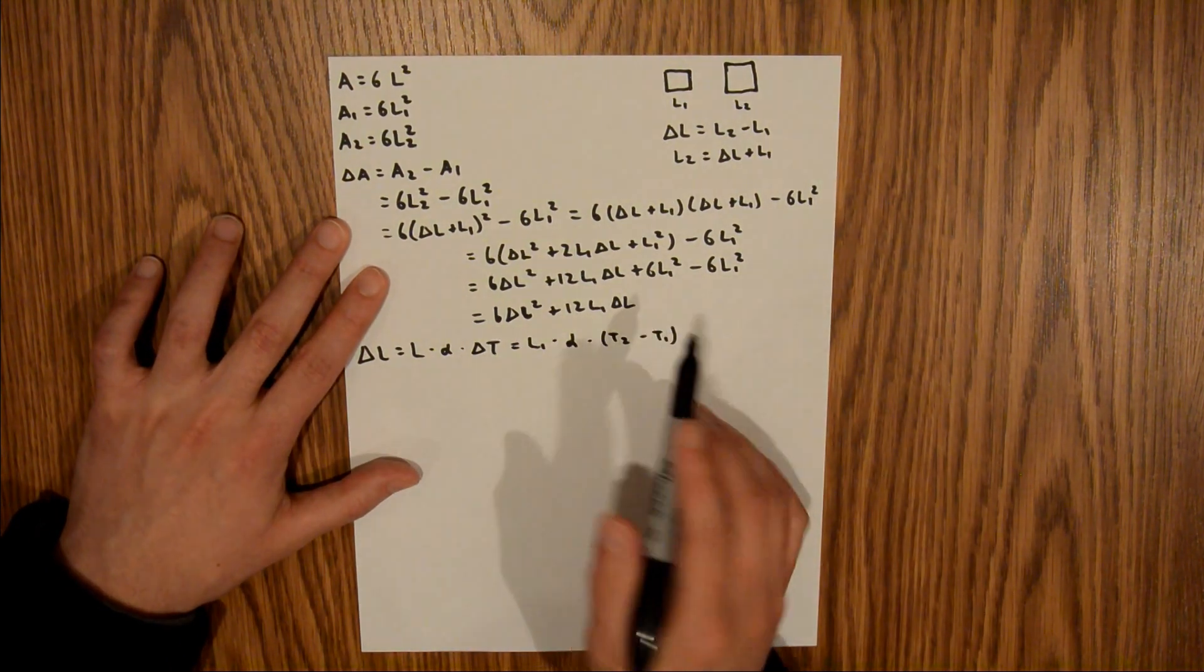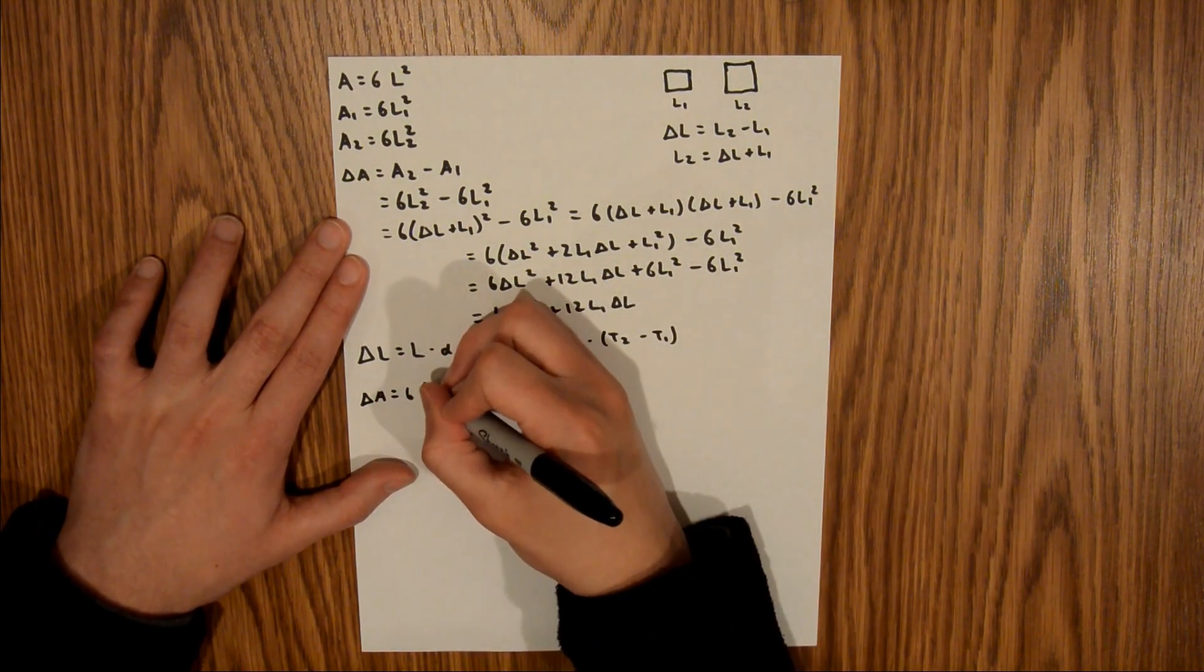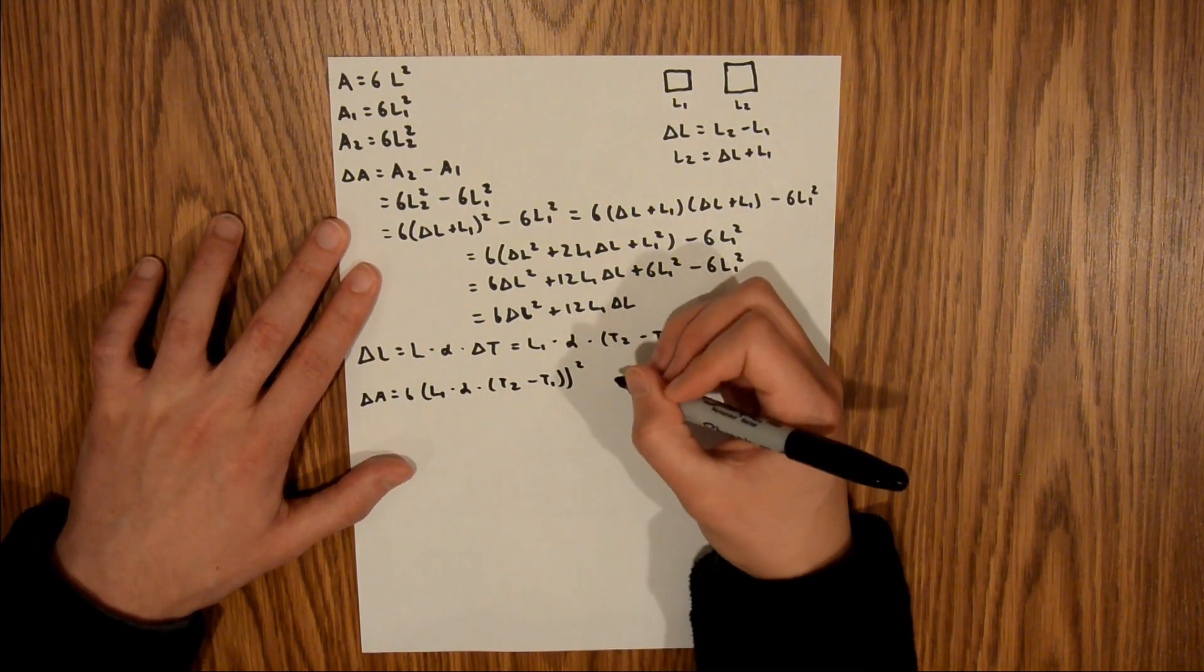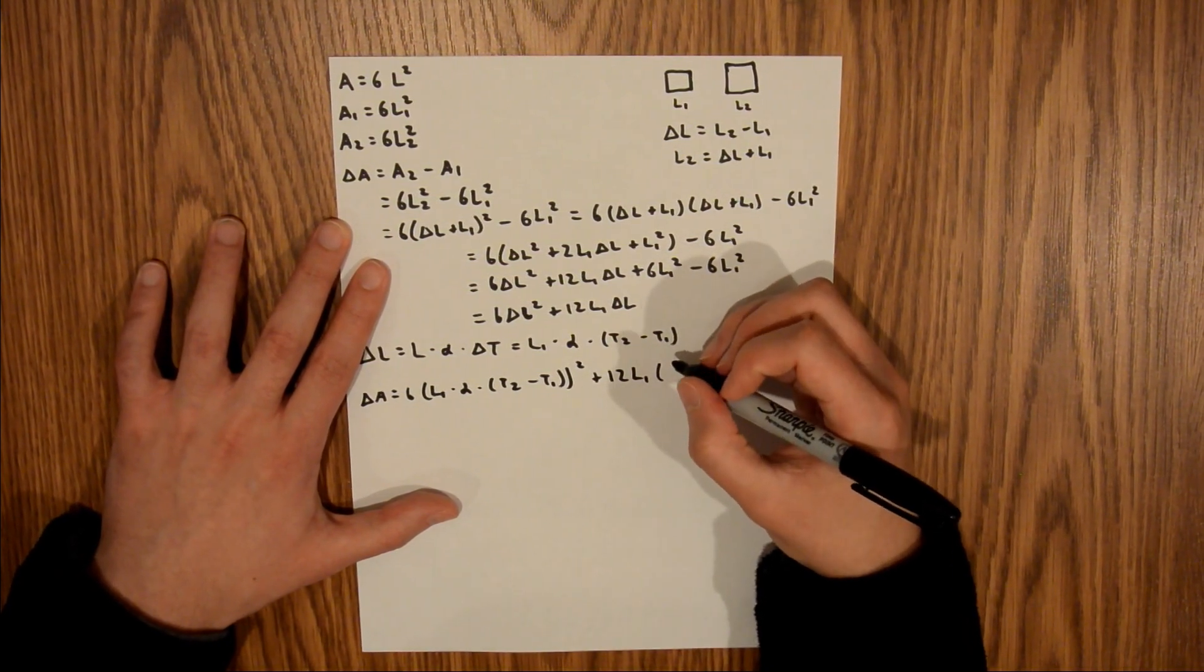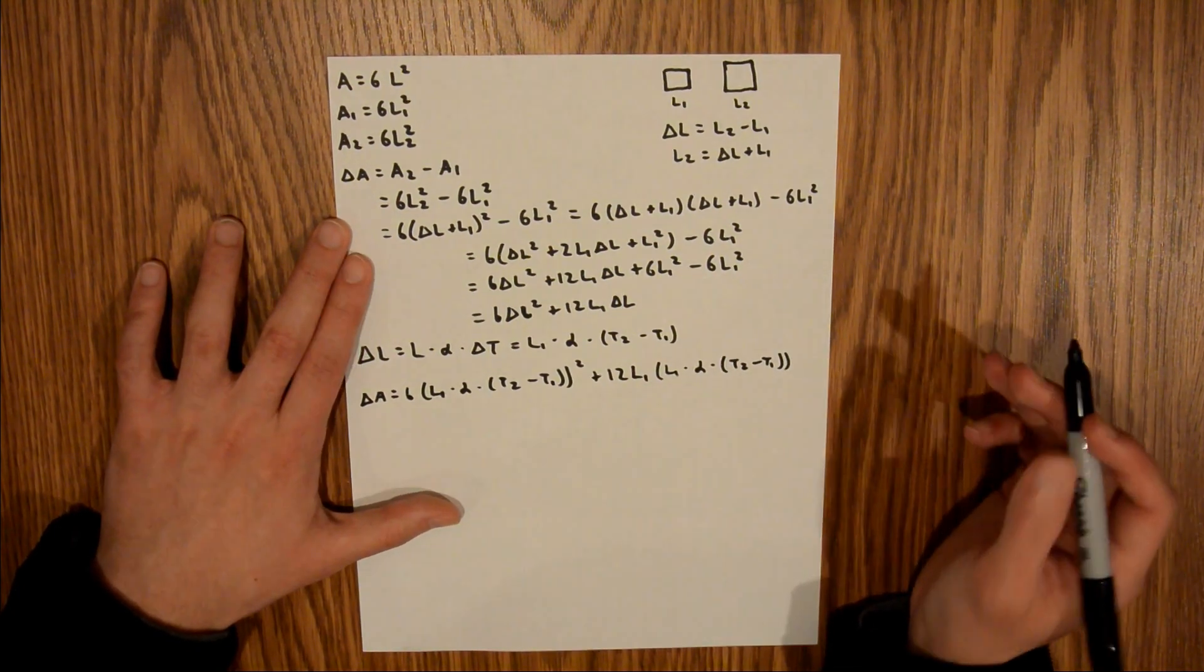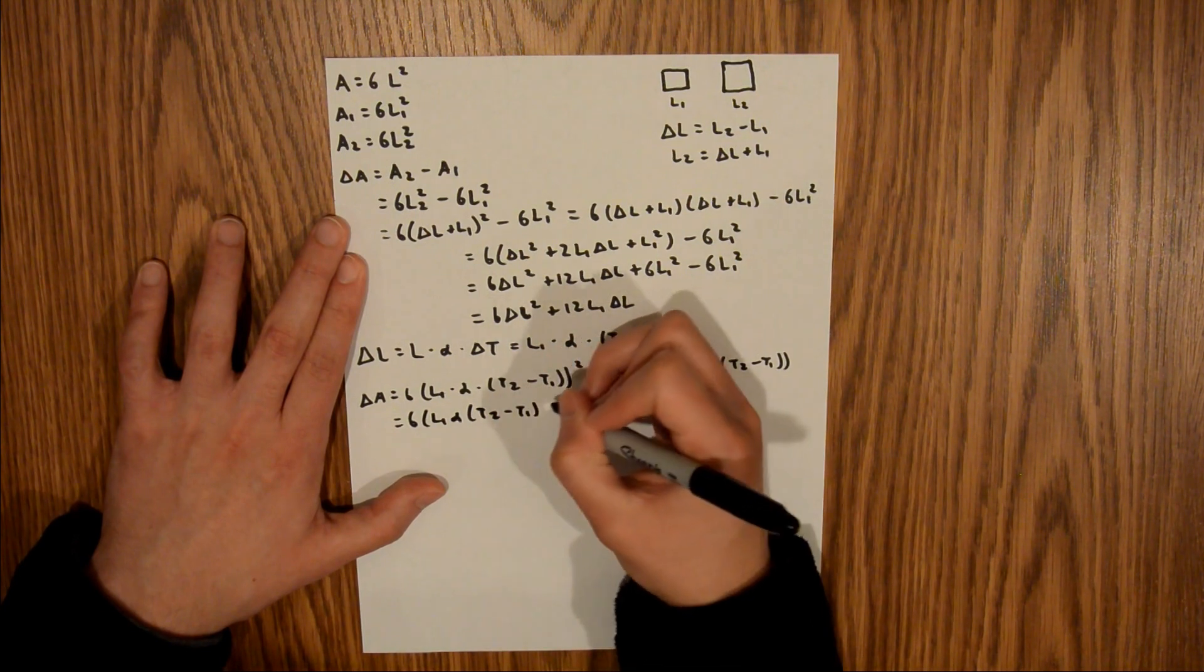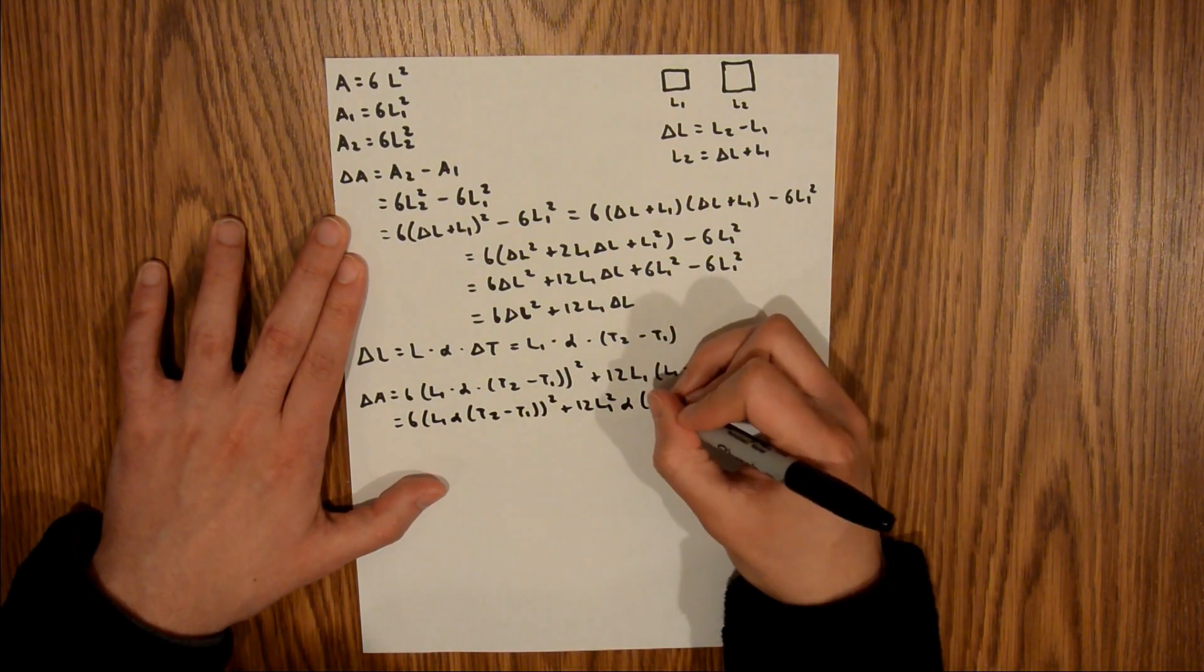And so now we can take that and plug it back into this equation, meaning that our delta A is equal to six times L1 times alpha times T2 minus T1, that entire quantity squared, and that's going to be plus 12 L1 times L1 times alpha times T2 minus T1. And just to simplify it a little more, we have 6 L1 alpha T2 minus T1 squared, plus 12 L1 squared alpha T2 minus T1.